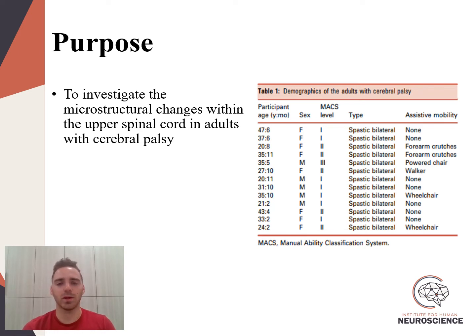To this end, we recruited a total of 13 adults with spastic bilateral cerebral palsy, as well as a cohort of 16 healthy adult controls to take part in a neuroimaging study.